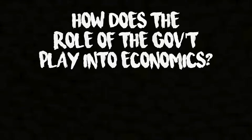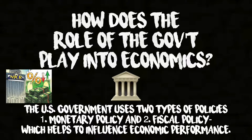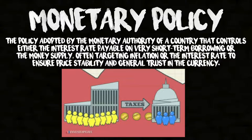Some of you may be thinking: how does the role of the government play into economics? The U.S. government uses two types of policies — monetary policy and physical policy — which help to influence economic performance. Monetary policy is defined as the policy adopted by the monetary authority of a country that controls either the interest rate payable on very short-term borrowing or the money supply, often targeting inflation or the interest rate to ensure price stability and general trust in the currency.